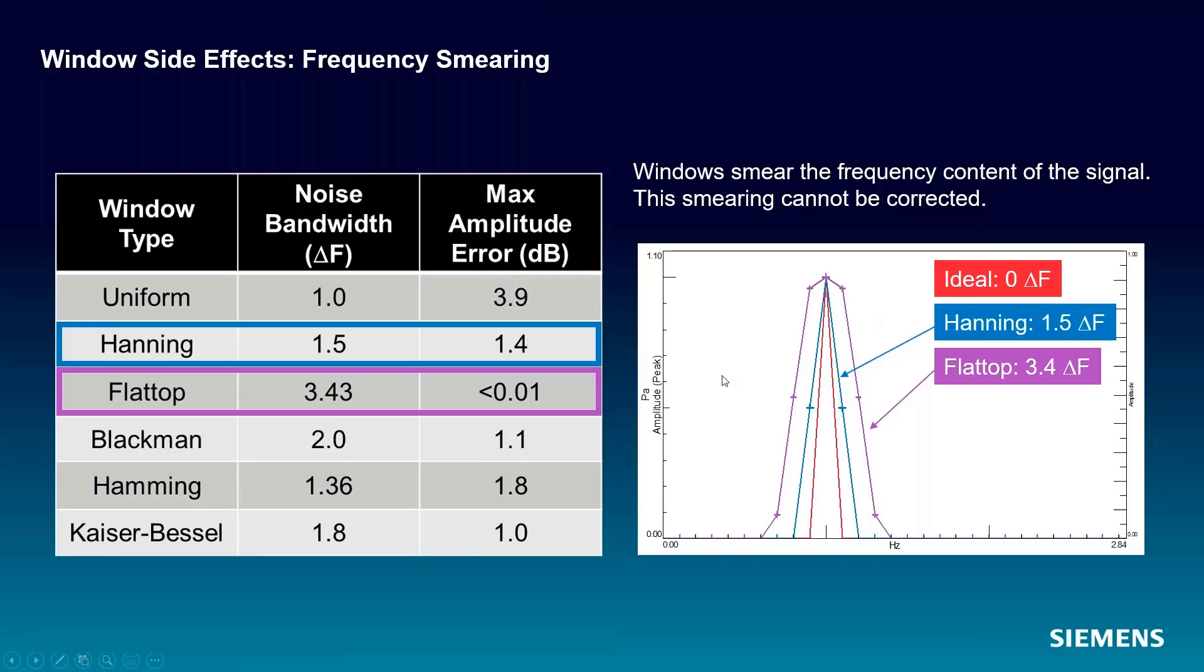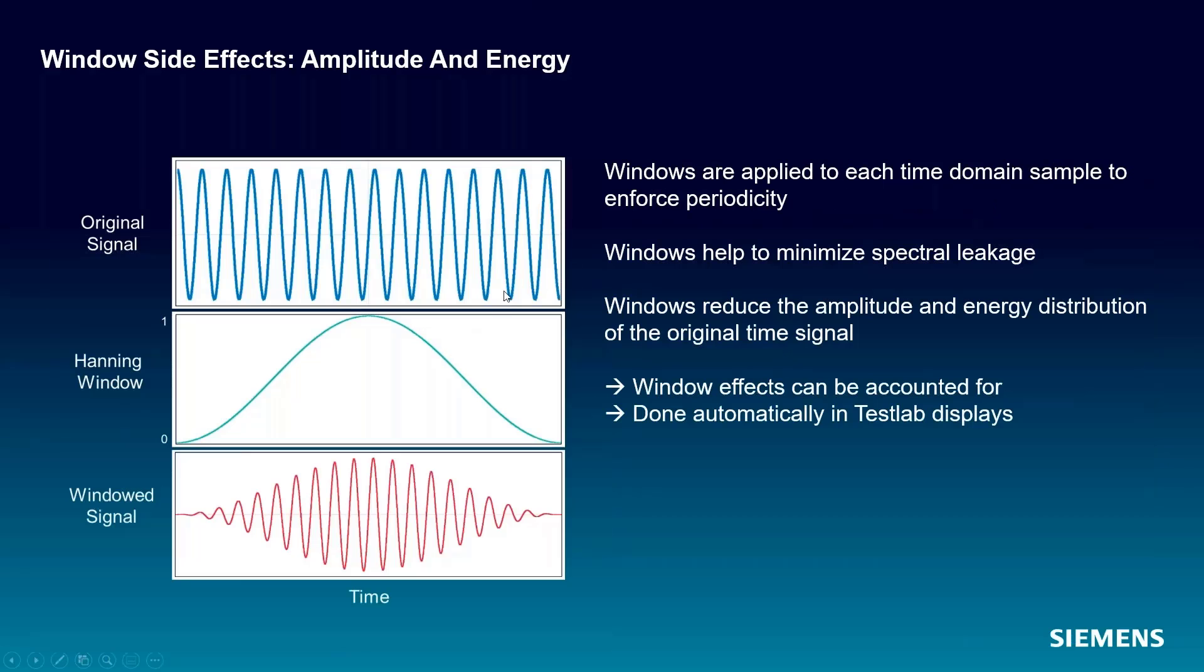Keep in mind that this has been corrected in the software and fixed with these correction factors applied. We'll talk about that a little bit. But of course, if you have your original signal and you force it to be zero at the beginning and end, you're going to lose amplitude and energy from the original signal. These window effects can be accounted for as we saw before.